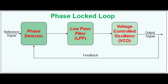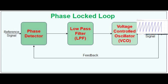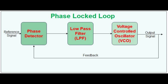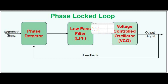The voltage-controlled oscillator, or VCO, generates the signal for frequency control. The PLL also consists of a low-pass filter, which is employed for noise and high-frequency signal reduction, or rather noise control.